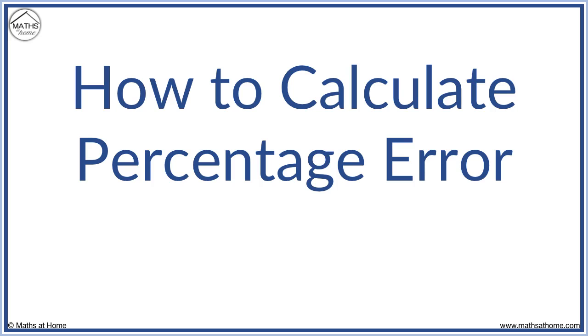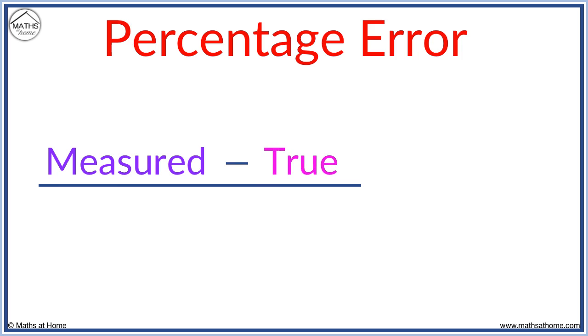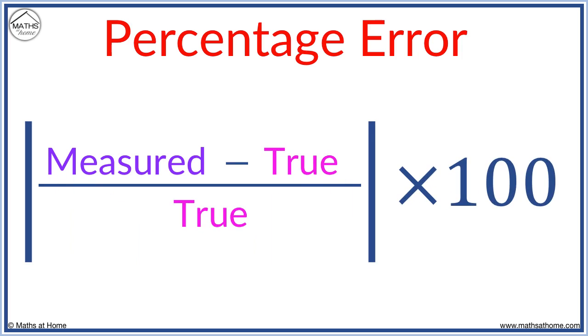In this lesson, we learn how to calculate percentage error. The percentage error is given by the formula: measured value minus true value, all over the true value, with the absolute value taken and then multiplied by 100.